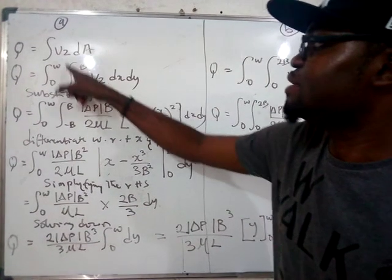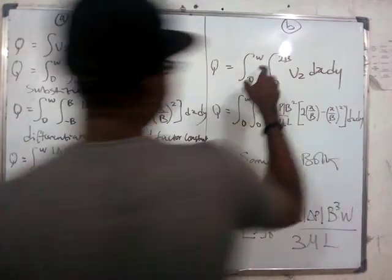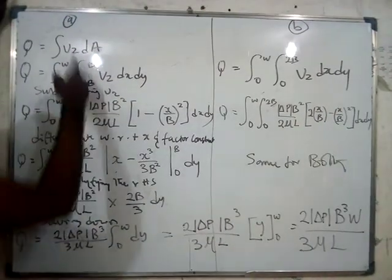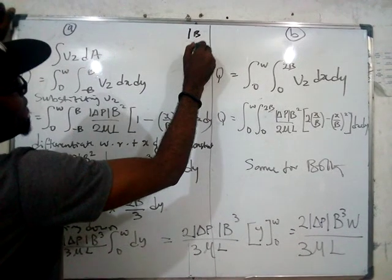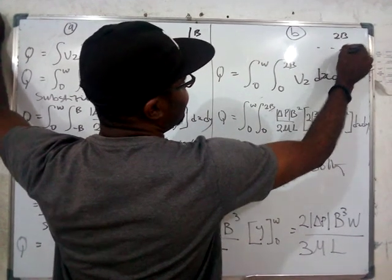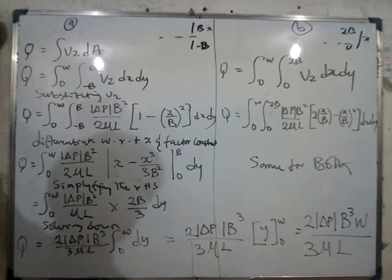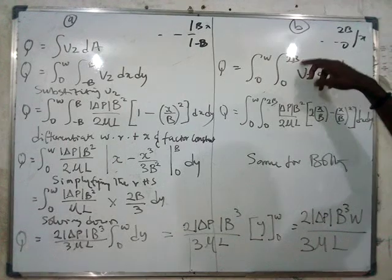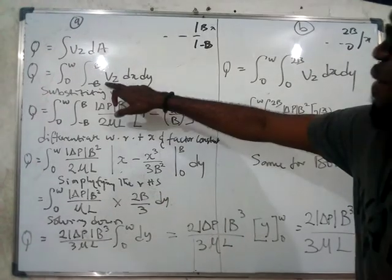I'll introduce a double integral here. This w to zero is the same for both a and b. For part a the boundary is b and minus b, whereas for part b the boundary is 2b and zero — because all of them are taken together as our x. That is what informed the boundary: b and minus b for part a, 2b and zero for part b. Take note.